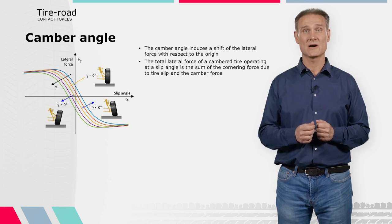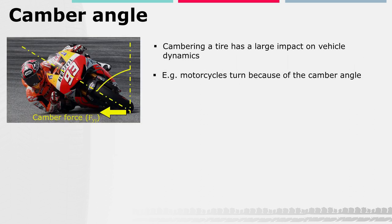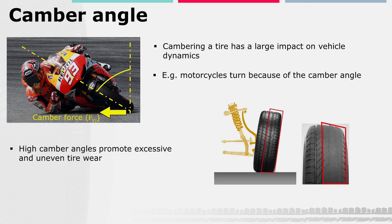This produces an offset of the curves with respect to the origin. Note that the camber thrust is generally one-fifth to one-tenth of the value of the cornering force obtained from an equivalent slip angle. The figure shows the dependency of the camber thrust on the camber angle and the vertical load. It is therefore clear that cambering a tire has a large impact on vehicle dynamics, especially for motorcycles, since a motorcycle turns because of the camber angle. It must be noted that large camber angles promote excessive and uneven tire wear.